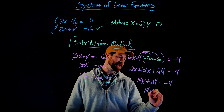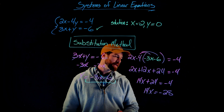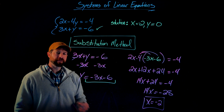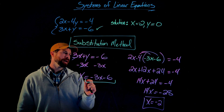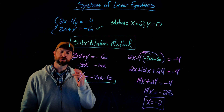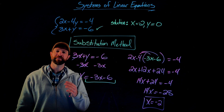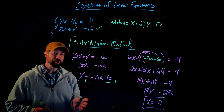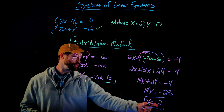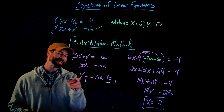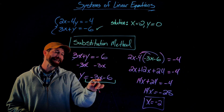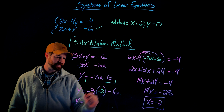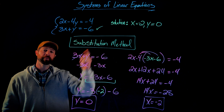Subtract 24 from both sides to get negative 28 on the right, then divide by 14 to get x equals negative 2. When I solve a system of linear equations using the substitution method, I get a value for one of the variables, but I still need to find the y value. One of the beautiful things about the substitution method is that once I have one variable, I can go back to the equation I solved for y, plug in negative 2 for x, and get y equals 0 — as shown previously.